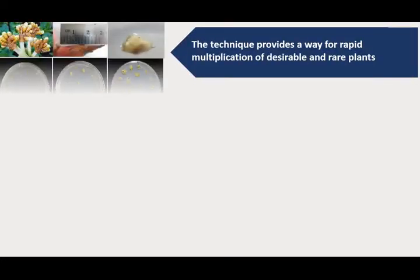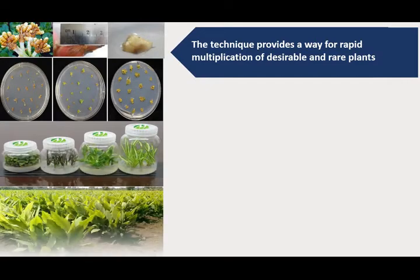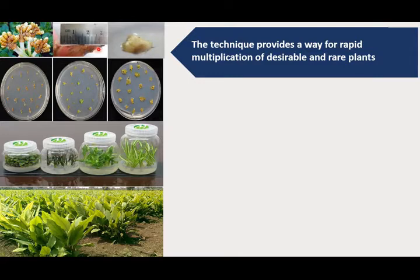The first application of plant tissue culture is that it provides a way for rapid multiplication of desirable and rare plants. Here in the image, you can see that just from a small piece of the rhizome of a ginger plant, it is possible to produce a large number of clones of the same ginger plant through tissue culture. For example, 20,000 plants per year per bud can be produced from turmeric, and one lakh plants per year per bud can be produced in eucalyptus.